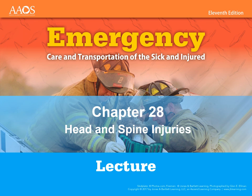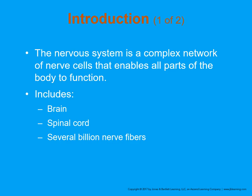Chapter 28: Head and Spine Injuries. The nervous system is a complex network of nerves and cells that allow our body to function. This includes the brain, spinal cord, and several billion nerve fibers.